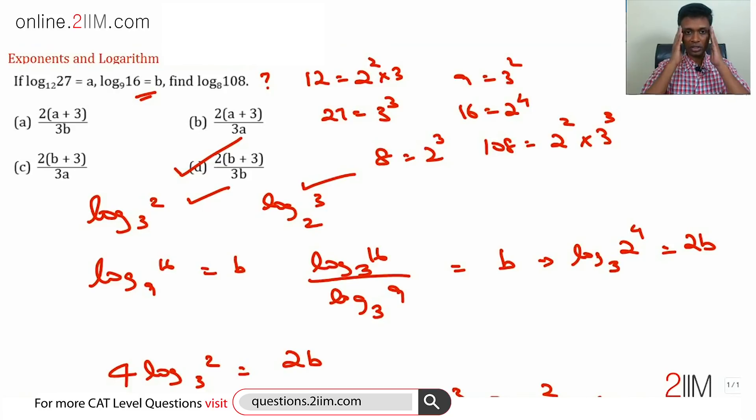So first step, isolate what primes are involved. Here only 2s and 3s are there, so everything will be in terms of whether log 3 to the base 2 or log 2 to the base 3. If we find one of the two, you're through.